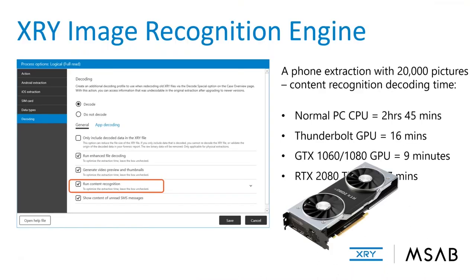Another feature to be aware of within XRY is an optimized version of image recognition using a graphics processing unit to accelerate image classification very quickly — basically a photo DNA type procedure. The result is images automatically classified into 12 categories, available to you as you examine them, narrowing the time it takes to get through images. It's a great use of GPU technology, which is getting cheaper every day, to assist examiners in getting work done faster and more efficiently.